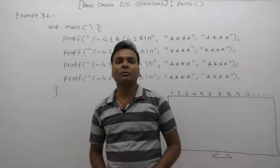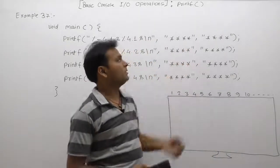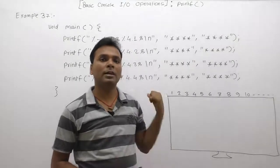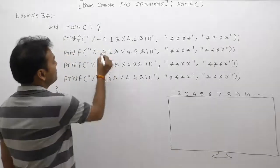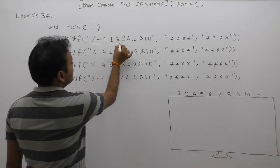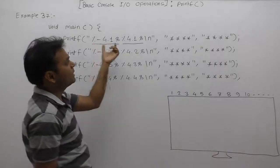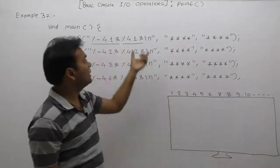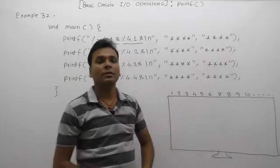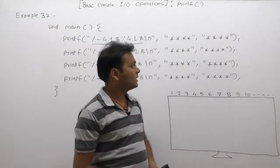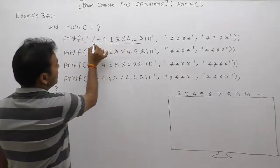Here is another example about printf where we are supplying two strings as arguments. Therefore we need to supply the format specifier twice — using percent-s two times. The same string is supplied both times, containing four stars, and we will display them one by one.